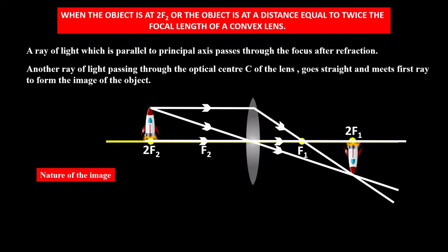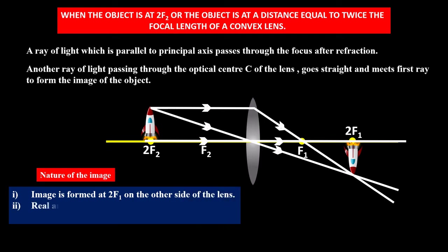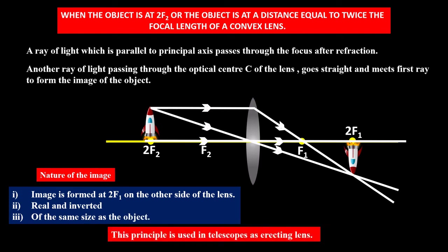Let us see the nature of the image. The image is formed at 2f1 on the other side of the lens. It is a real and inverted image, and the size is the same as the size of the object.